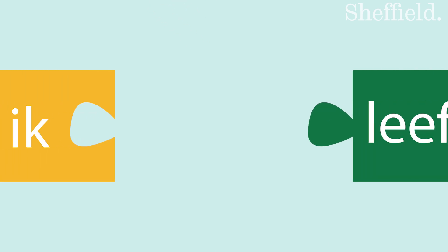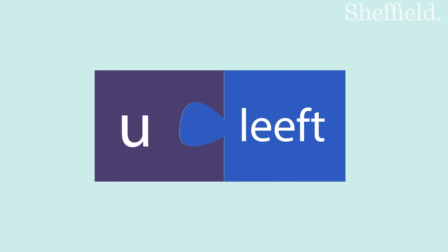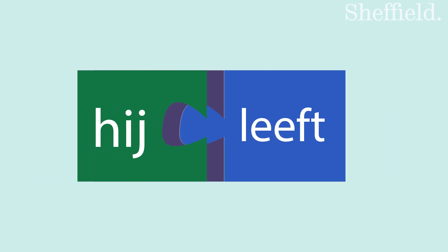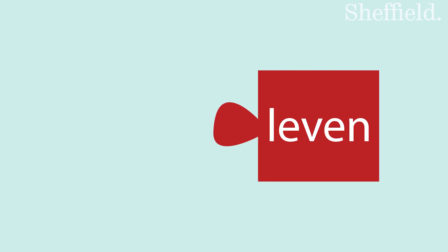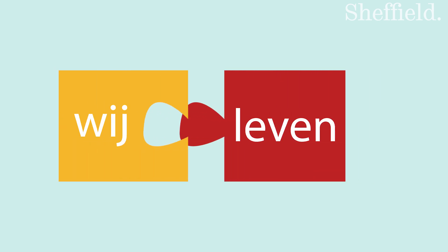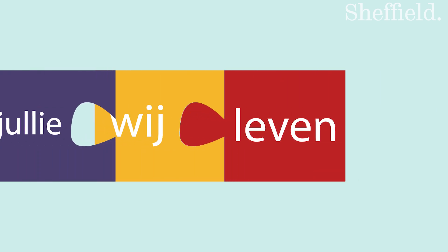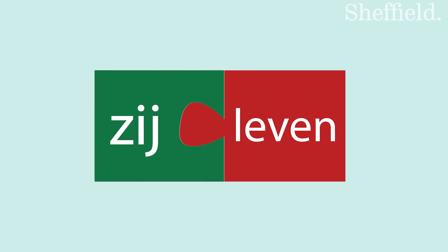For good measure, let's look at all the subject options for leven: ik leef, jij leeft, u leeft, hij/zij/het leeft. And the plural — remember the plural is always the full verb — wij leven, jullie leven, zij leven.